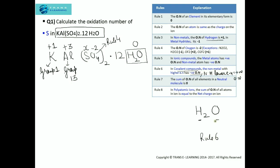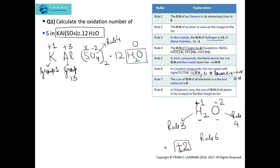The electronegativity of oxygen is far greater than that of hydrogen, so oxygen has a negative oxidation number while hydrogen has a positive oxidation number. As per rule 3, in non-metals, the oxidation number of hydrogen is plus 1. And as per rule 4, the oxidation number of oxygen is minus 2. Calculating: hydrogen is plus 1 with two atoms, giving a total of plus 2; oxygen contributes minus 2. Since plus 2 and minus 2 cancel each other, the net charge on the water molecule is 0.